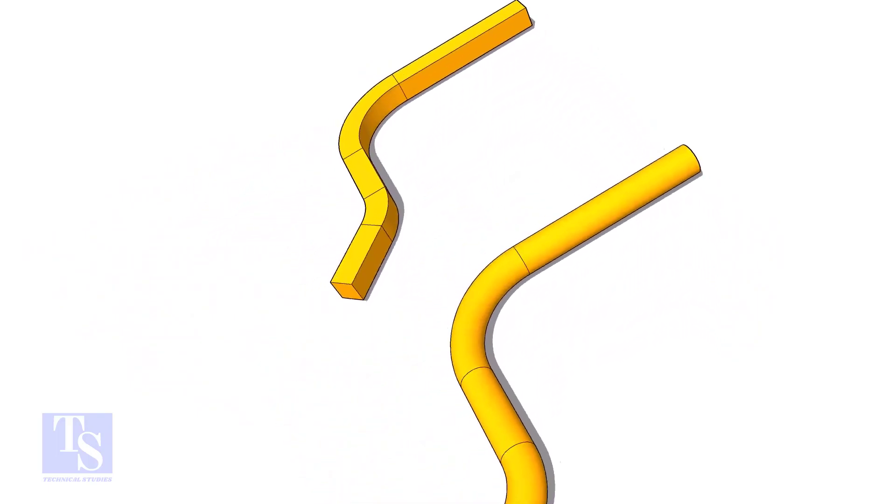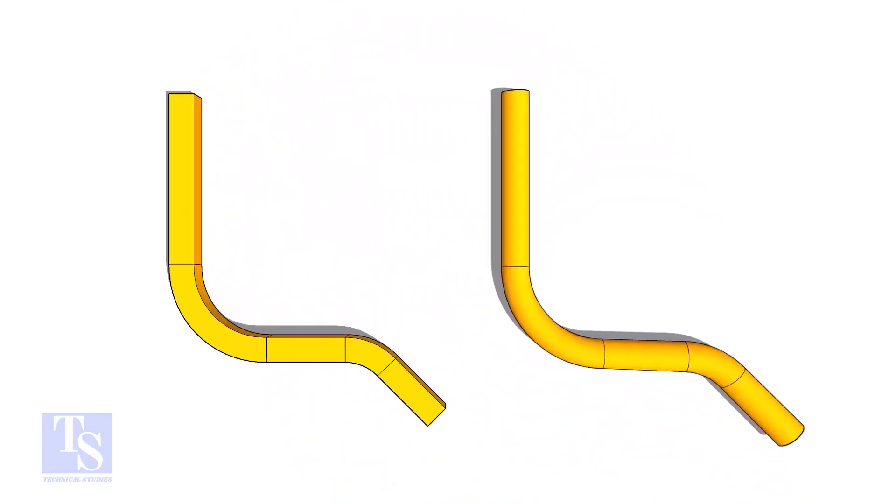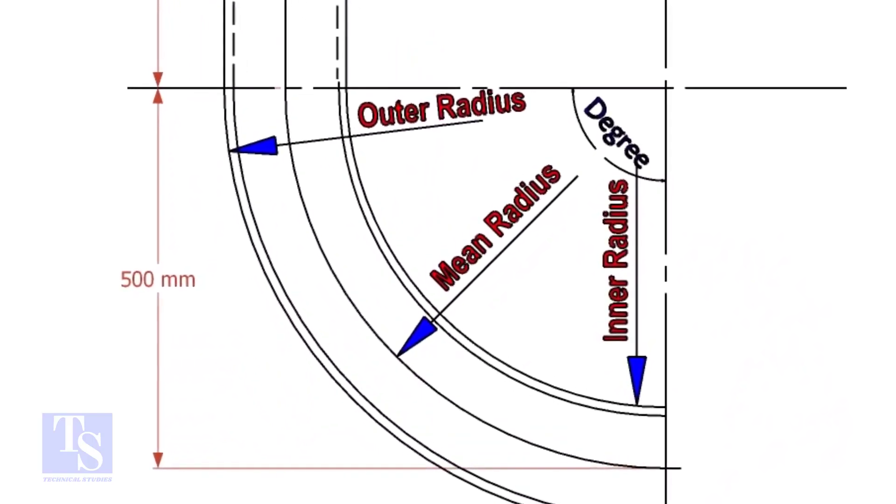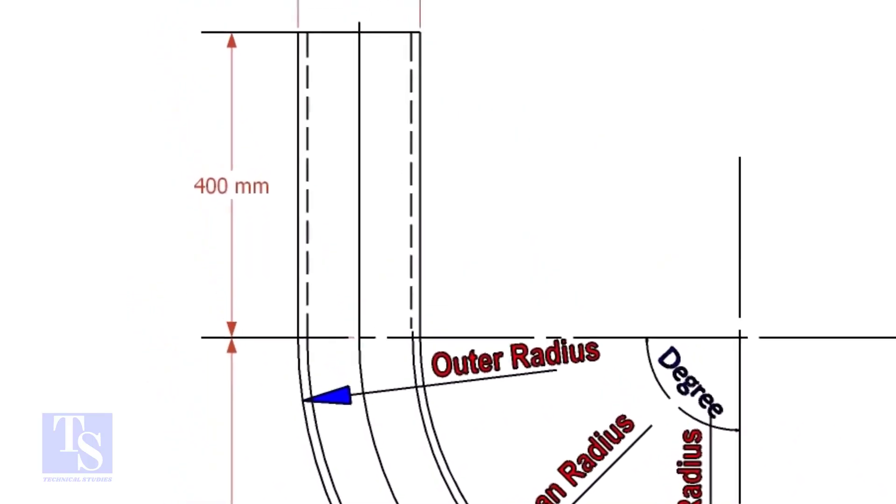This method is applicable to rods, bars, etc. To calculate the required length of a pipe to make a bend, we need to know the bend radius, the included degree, and the diameter of the pipe.